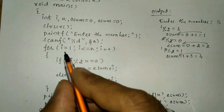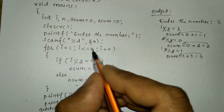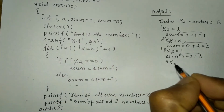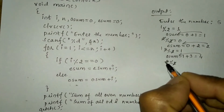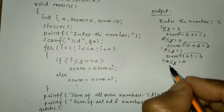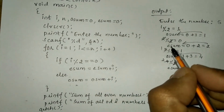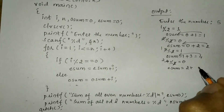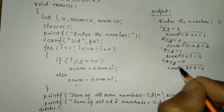Now i = 4. 4 is less than or equal to 5 — condition is true. We check: 4 modulo 2 — it is exactly divisible by 2, 2 twos are 4, remainder is 0. So esum = esum + i = 2 + 4 = 6. So 6 is stored in esum. Control returns to the for loop, incrementing i to 5.